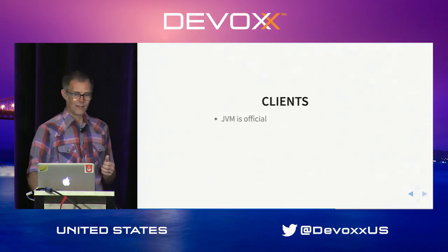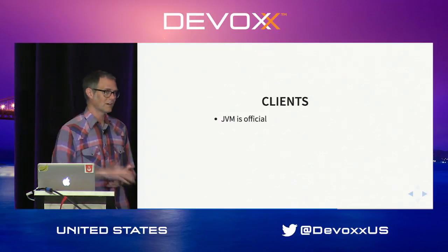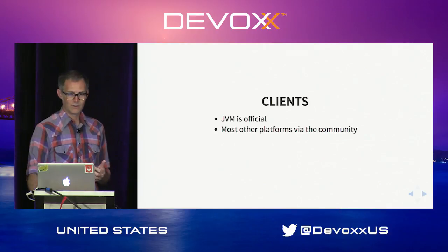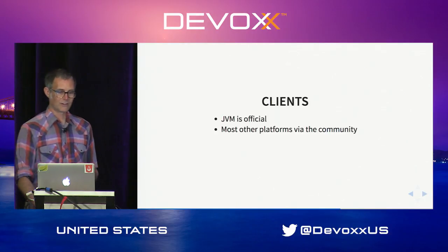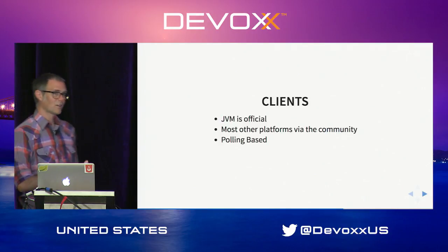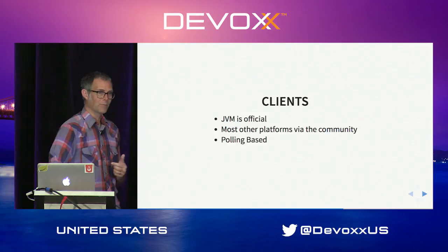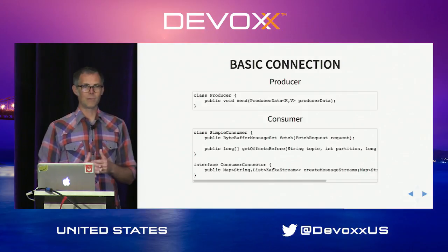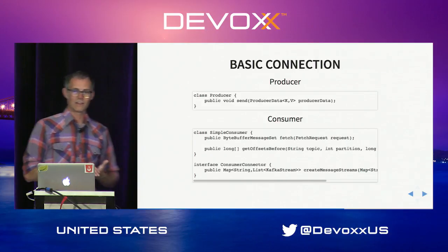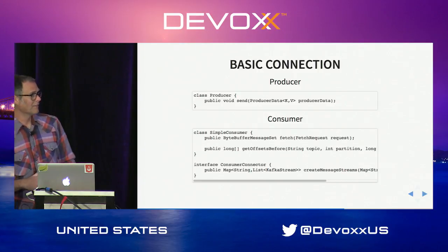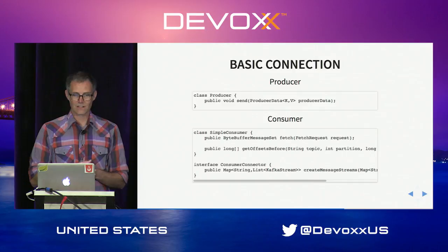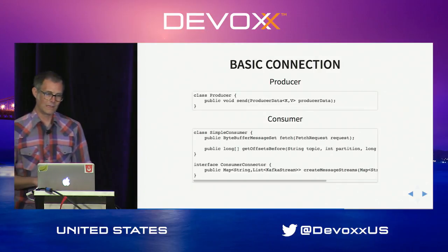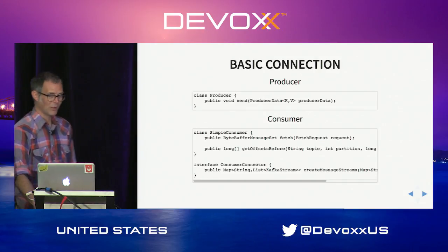Let's talk about clients for Kafka. The JVM is the official one because Kafka is built on the JVM, but there are other clients for really anything you can imagine. The clients are polling-based on the consumption side, which is pretty different from most typical messaging system consumers. The raw basic API of Kafka is: a producer that sends data, and a consumer that can fetch offsets for a given partition and fetch records based on those offsets — a really simple API underneath.